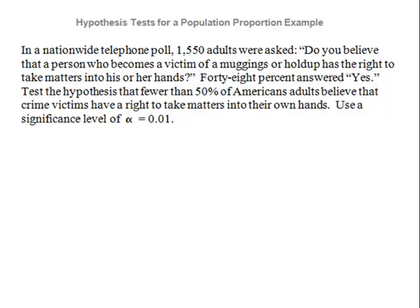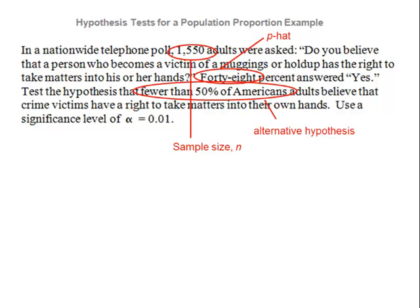Our first step is to identify our information. The sample size n is 1,550 — that's how many people answered the telephone poll. We're also given that p-hat, the sample proportion, was 48%. The alternative is fewer than 50% of Americans, so this is the claim. The alpha level is 0.01. We have enough to complete the test.